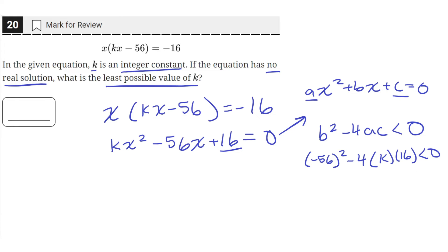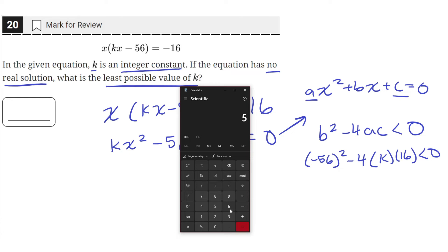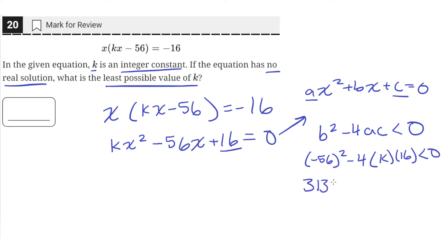Let's simplify this down. Negative 56 squared is just the same thing as 56 times 56 since negative times a negative cancels out. So we have 3136 minus 4 times k times 16, which is just equal to negative 64k. So that has to be less than zero.